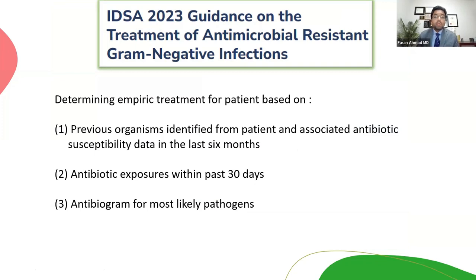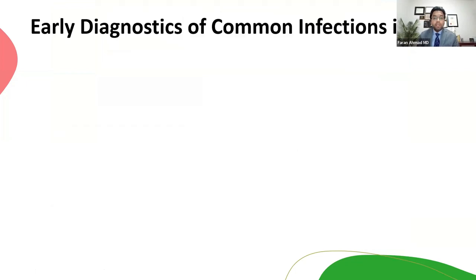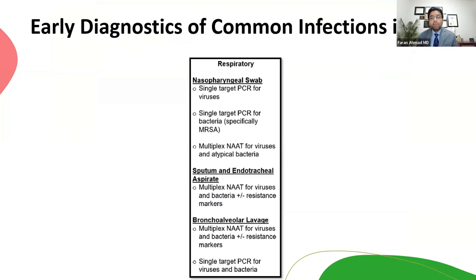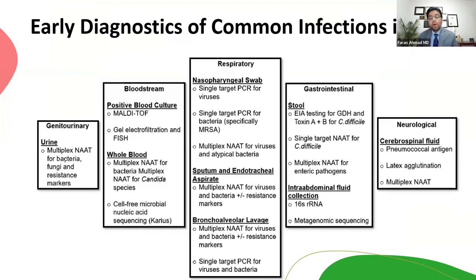Treatment of gram-negative infections depends on your practice setting, previous organisms encountered, and prior antibiotic exposure in the past 30 days. In my ICU practice, I use rapid detection tests rather than waiting five days for cultures — for bloodstream infections I use the BioFire panel for early organism identification, and similarly each body system has its own PCR-based testing to detect pathogens sooner.